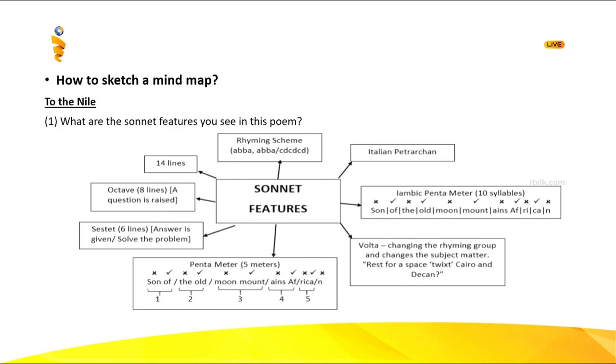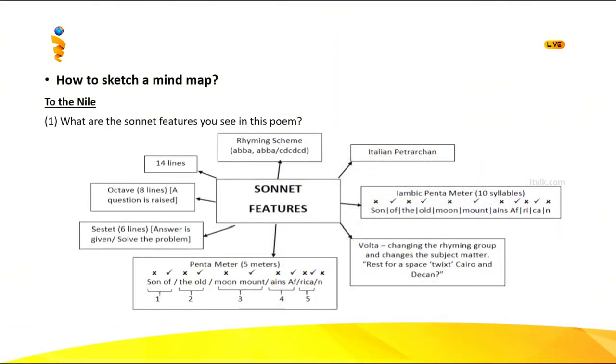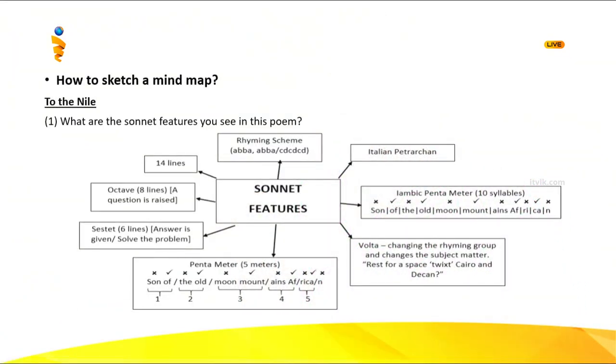This is how to sketch a mind map. If you get a question about sonnet features, you need to know them well. Draw a circle and write down the topic — for example, 'sonnet features.' In a sonnet you have rhyming schemes like ABBA ABBA CDCD, then the Italian Petrarchan form, known as Petrarch's sonnet, which involves the rhyming scheme and 14 lines. Then there is iambic pentameter, which means 10 syllables divided into unstressed and stressed patterns.